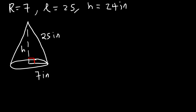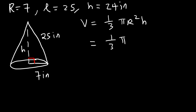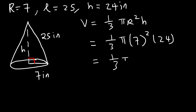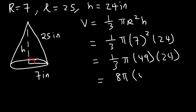Let's calculate the volume. V = one-third π r² h, with r = 7 and h = 24. 7 squared is 49. One-third of 24 is 8, so we have 8π times 49.